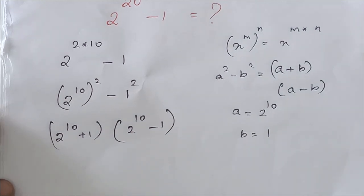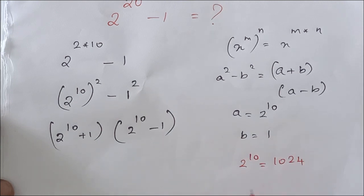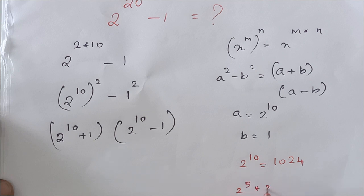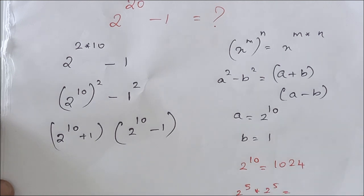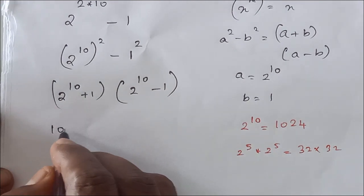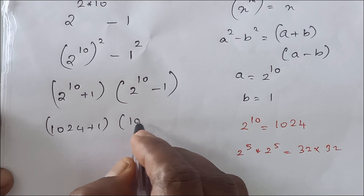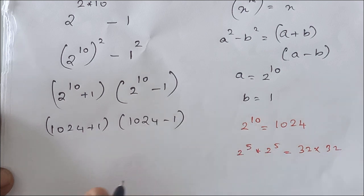2 power 10 value is nothing but 1024. We can verify: 2 power 5 into 2 power 5 — 2 power 5 is 32, and 32 into 32 is nothing but 1024. So this gives you 1024 plus 1, into 1024 minus 1.